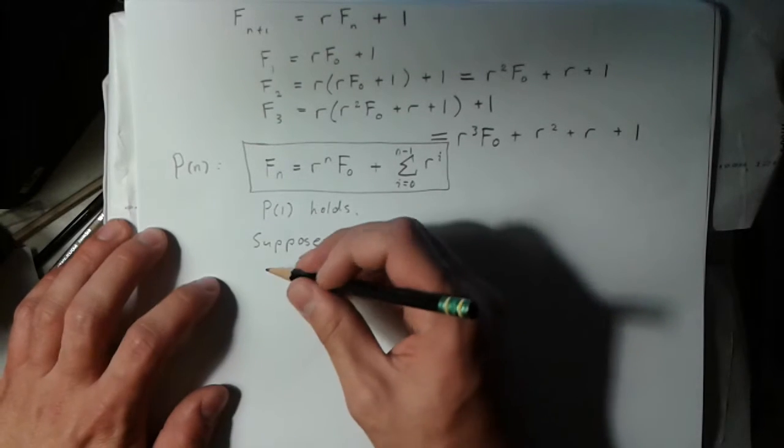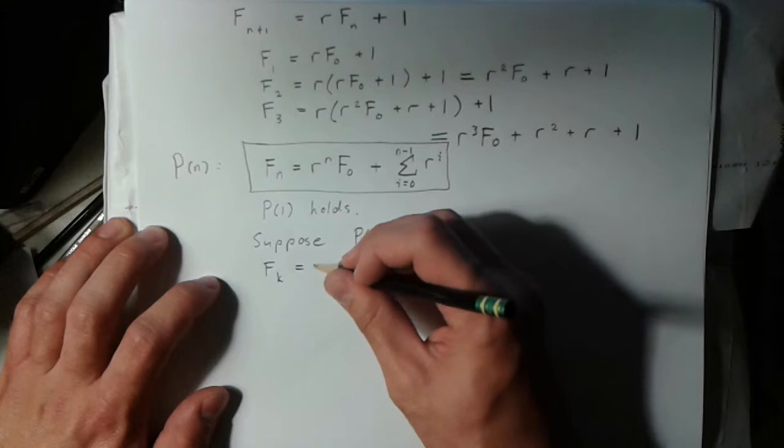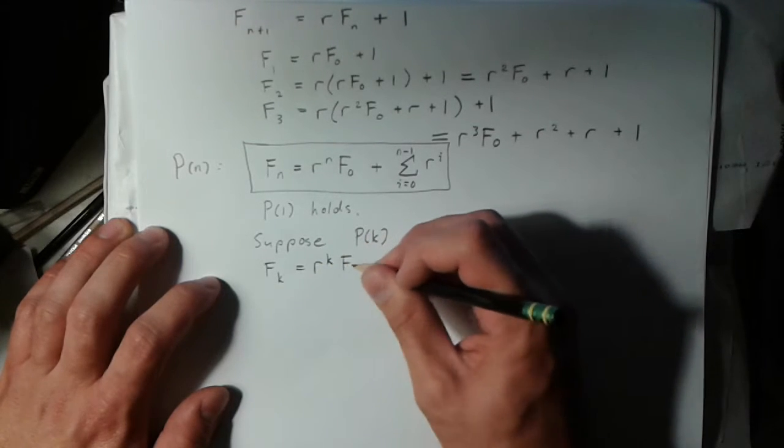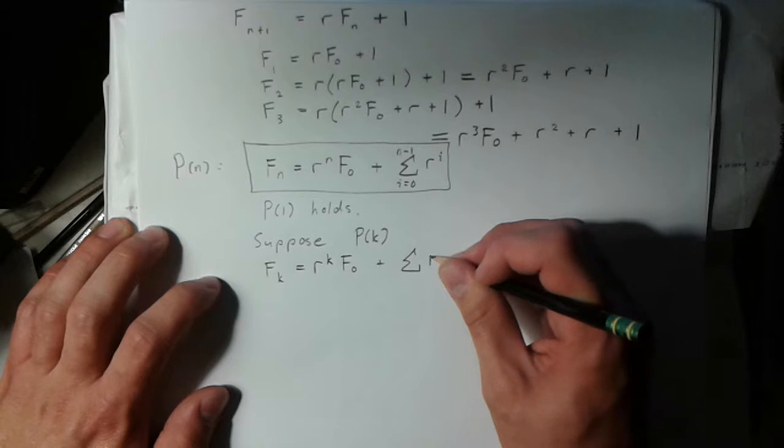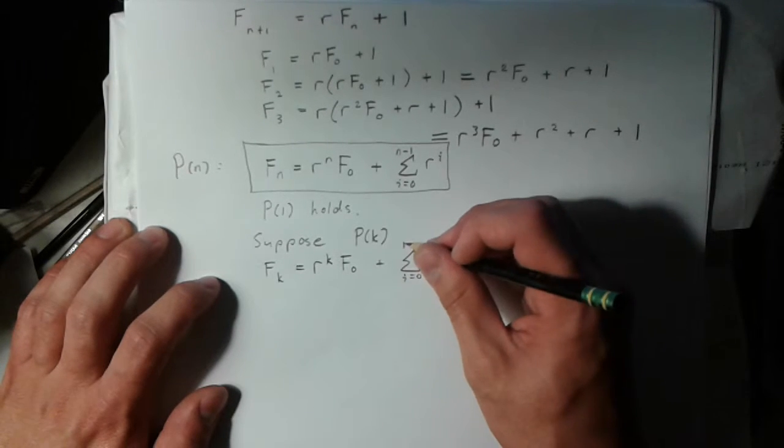And so now when I'm doing that, I'm just supposing that fk is equal to r to the k f0 plus sum of r to the i from 0 to k minus 1.